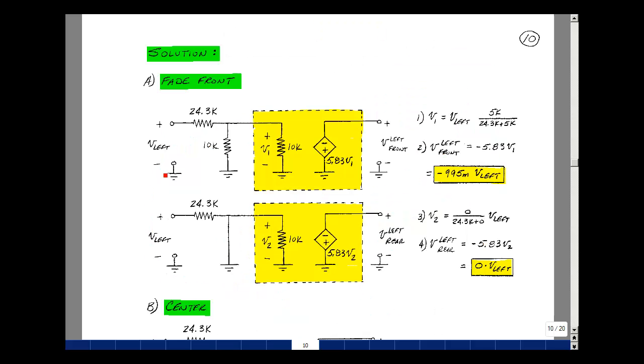So here's my left channel music. I've got a 24.3k, and then I've got a pot back to ground. I've got the full value of the pot when I slide it all the way to fade front. And then I have my inverting amplifier, which has an input resistance of 10k and a voltage gain of minus the resistor ratios. In other words, a minus 5.83. Same is true for the bottom op amp.